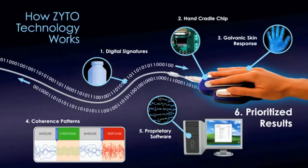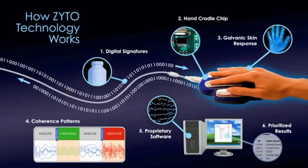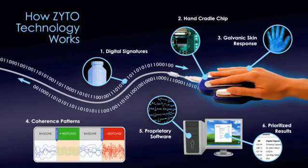After analyzing the data from the hand cradle, the computer displays the data in an easy-to-read graphical interface. The data shows the body's responses ranked in order of priority. Results are optimized and time is used more efficiently by focusing on the body's priorities.